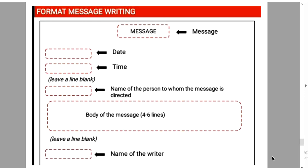Then you have to write the name of the sender — the name of the writer or sender. So revising the format of message writing: first we write the date, then the particular time, then leave a little space, then write the name of the person to whom the message is directed or intended, then write the body of the message, then leave a little space, and then write the name of the sender.